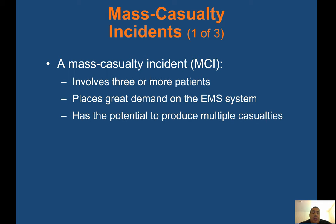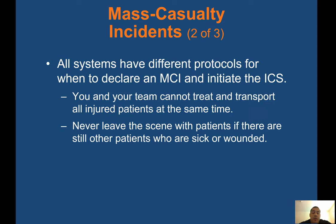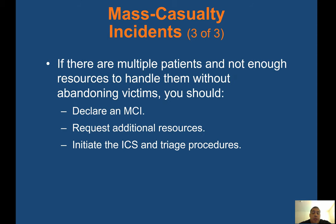Mass casualty incidents: an MCI involves three or more patients, places great demand on the EMS system, and has the potential to produce multiple casualties. All systems have different protocols for when to declare an MCI and initiate the ICS. You and your team cannot treat and transport all injured patients at the same time — never leave the scene if there are still other sick and wounded patients. If there are multiple patients and not enough resources, declare an MCI, request additional resources, and initiate ICS and triage procedures per your county protocol.